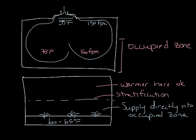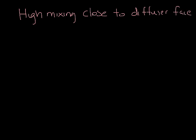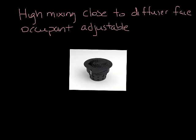UFAD systems use diffusers designed to provide high mixing as close to the diffuser face as possible, so that you can get to 75 degrees and 50 feet per minute close to the diffuser. A typical underfloor diffuser is a high-induction, occupant-adjustable swirl diffuser, and it looks something like this. This is our Taffer diffuser.